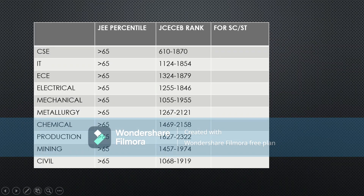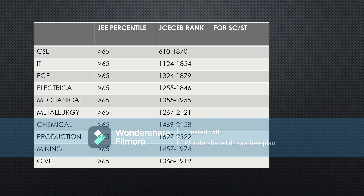Now let's get into the SC/ST category. For ST candidates, if you score above 65 to 70 percentile, you are in a safe zone — whichever branch you choose in BIT Sindri, you will get it if you score above 70 percentile. For SC there is a little bit of variation. If you have any query regarding the cutoff, just put it down in the comment section.